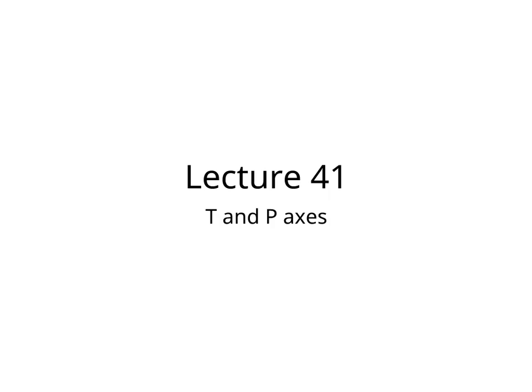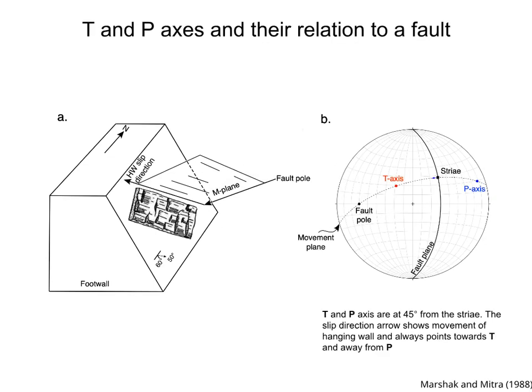Lecture 41: T and P-Axes. Fault movement is often visualized in a so-called T and P-axis diagram. Figure A shows a fault with slicken fibers or striae indicating reverse sense of movement. The fault pole and the hanging wall slip direction define a plane, which is called the movement plane or M-plane.